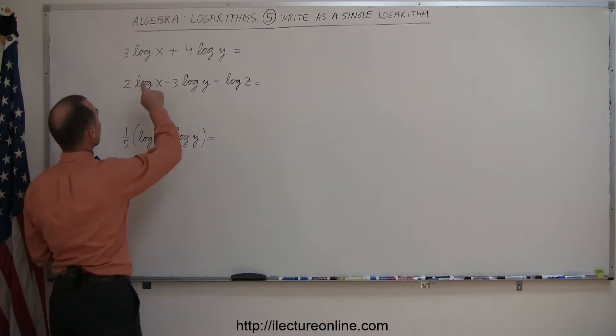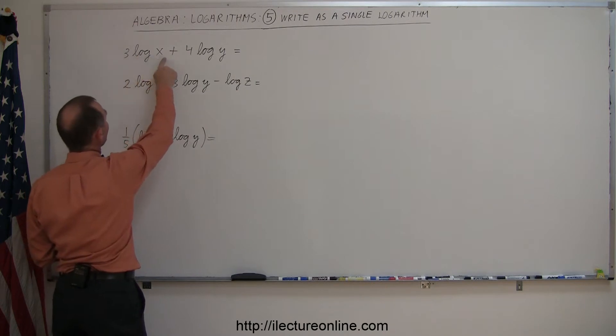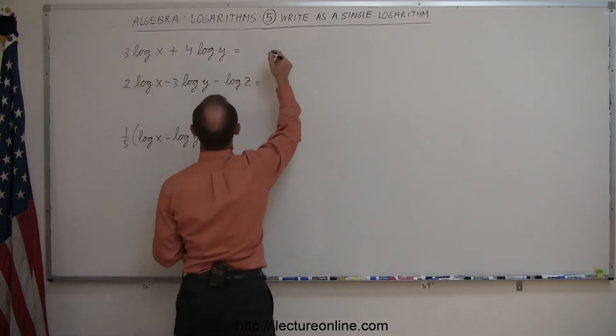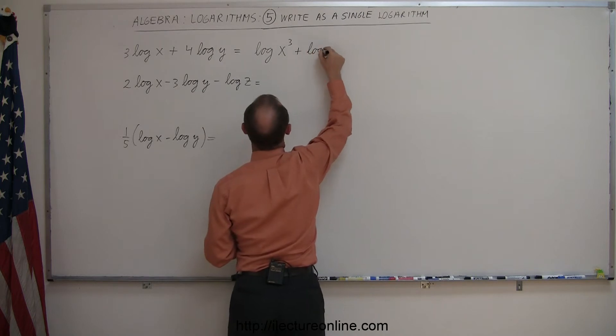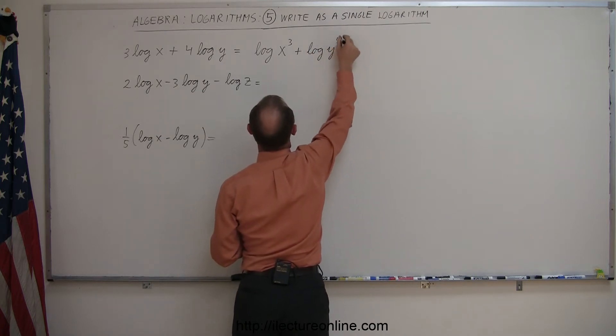The first thing we're going to do is whenever we see a number in front of the log of x, like here, we can make it the exponent of the variable. So in this case, this can be written as the log of x to the third power plus the log of y to the fourth power.